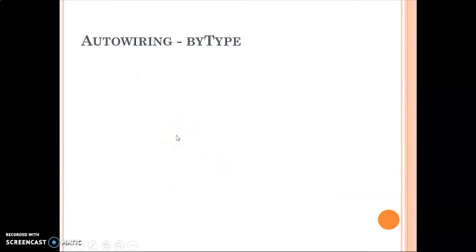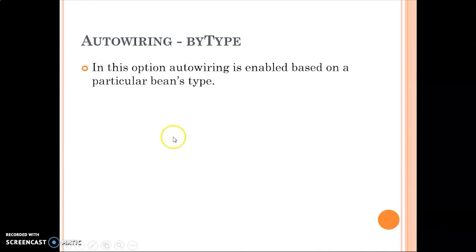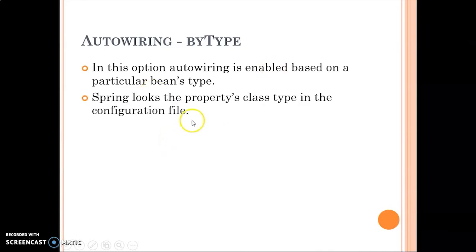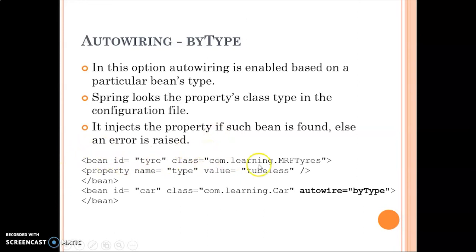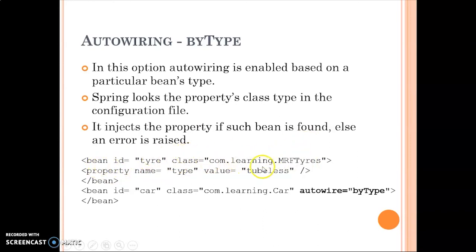Next we have auto-wiring by type. Rather than matching by name, we match by class type. Spring looks for a bean that matches the type of the property. Since MRF Tires implements the Tire interface, if a bean of type Tire or MRF Tires is found in the configuration file it will still match because it is an implementation of the Tire interface.